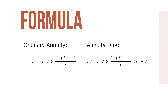Students with financial, business, or scientific calculators may be able to use the following formulas to solve for the future value of an ordinary annuity and the future value of an annuity due. Where FV equals future value, PMT equals annuity payment, I equals interest rate per period (nominal rate divided by periods per year), and N equals the number of periods (years times periods per year).